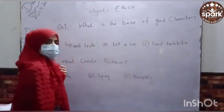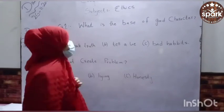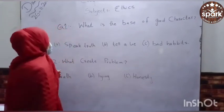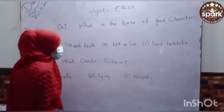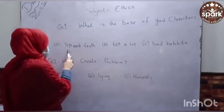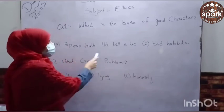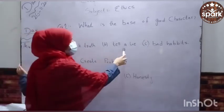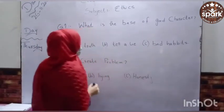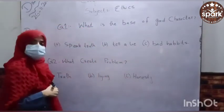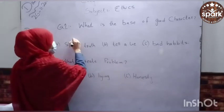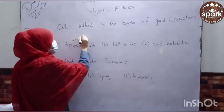Good character ka jo best he, wo kya he? You have three options. So tell me students, which is the correct answer? Option A is speak truth, B is starting a lie, C is bad habits. Correct answer A is speak truth.